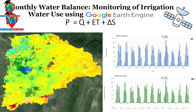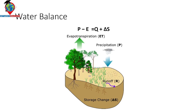First of all, water balance is an accounting of the input and output of water. The water balance of a place — whether it is an agricultural field, watershed, catchment, or any other place where water is available — has precipitation as the major input and evapotranspiration as the major output. The equation is: Precipitation minus Evapotranspiration gives you the water surplus.